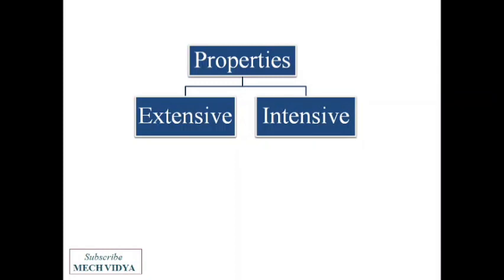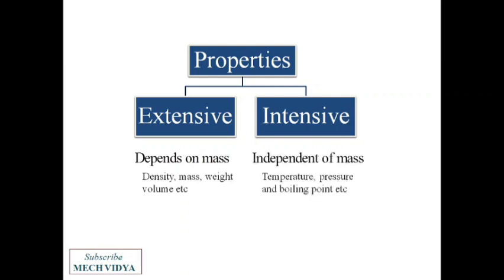Those properties which depend on the extent or mass of a system are known as the extensive properties, like mass, volume, density, etc., while those properties which are independent of mass are called intensive properties. One example is temperature.